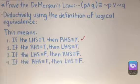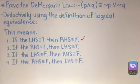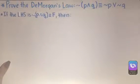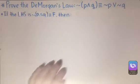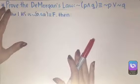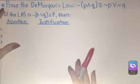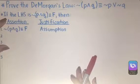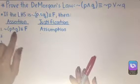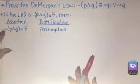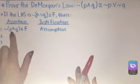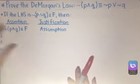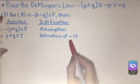Now let's work with number three: if the left-hand side is false, then the right-hand side should be false. If the negation of (P and Q) is false, we write our assertions and their justifications. Our assumption is that the negation of (P and Q) is false. Since negation gives the opposite value, if the negation of (P and Q) is false, then P and Q should be true — by definition of negation applied to step one.